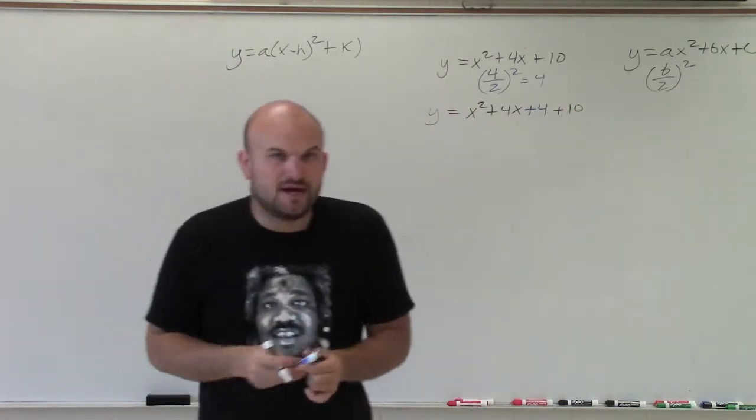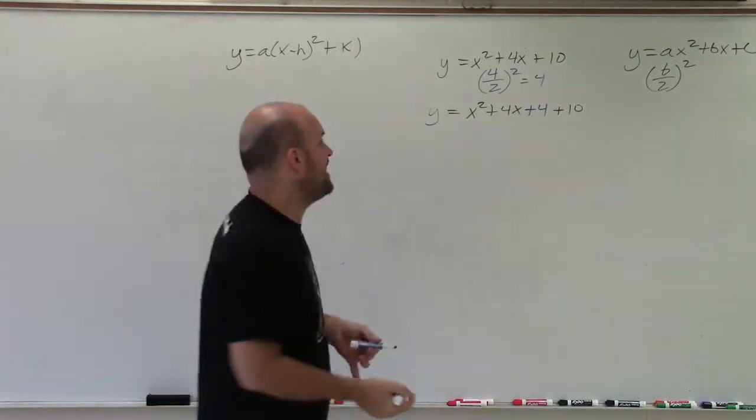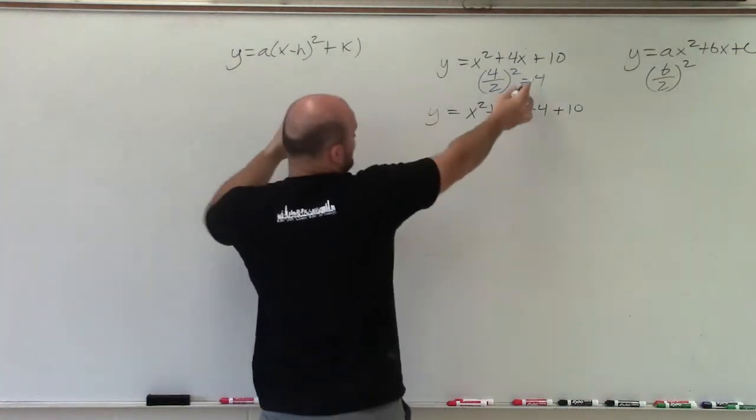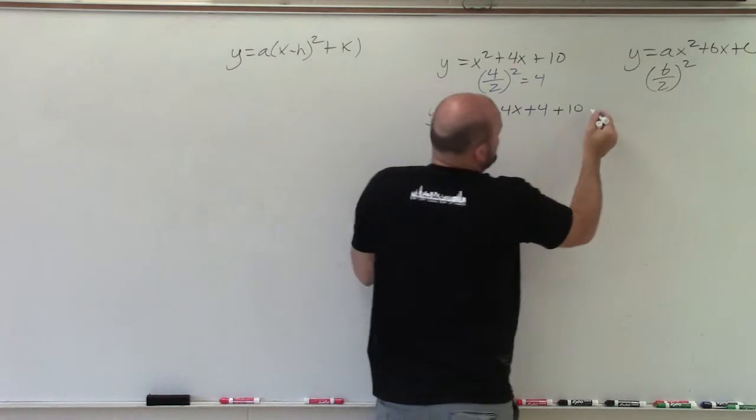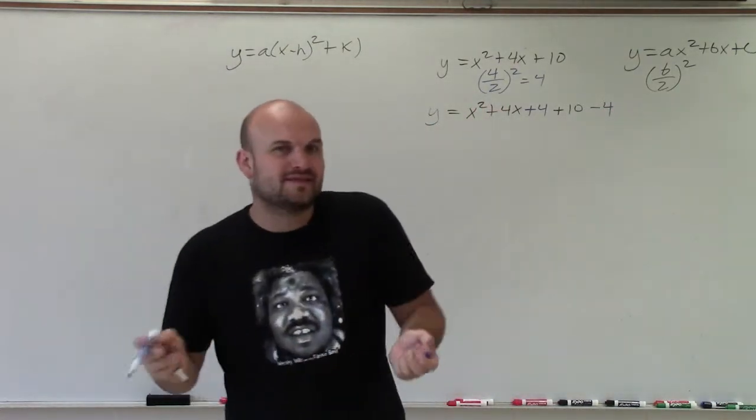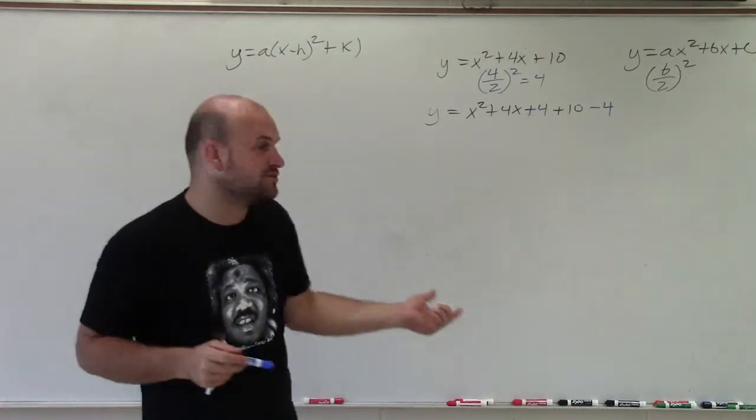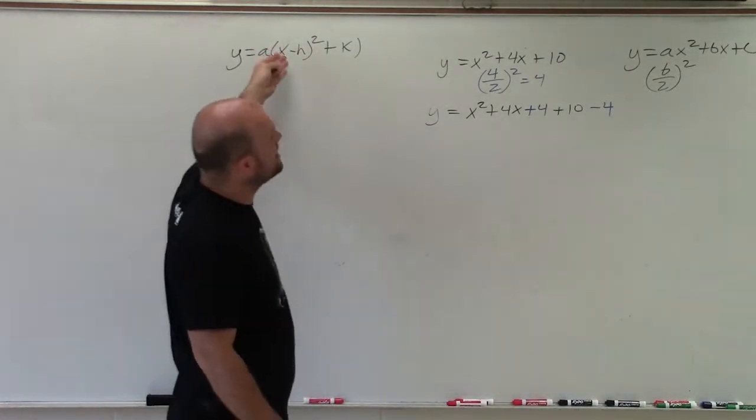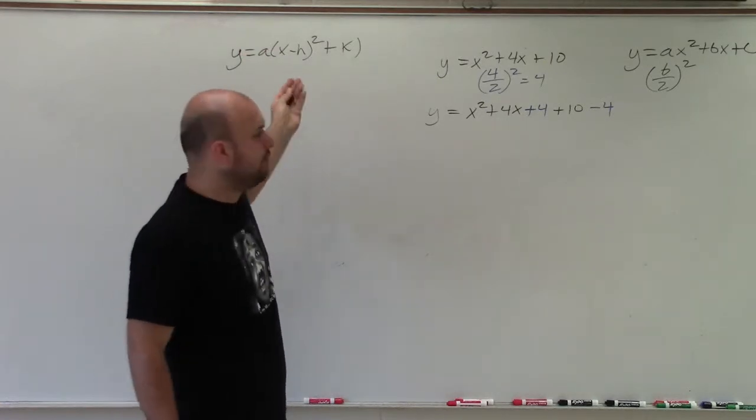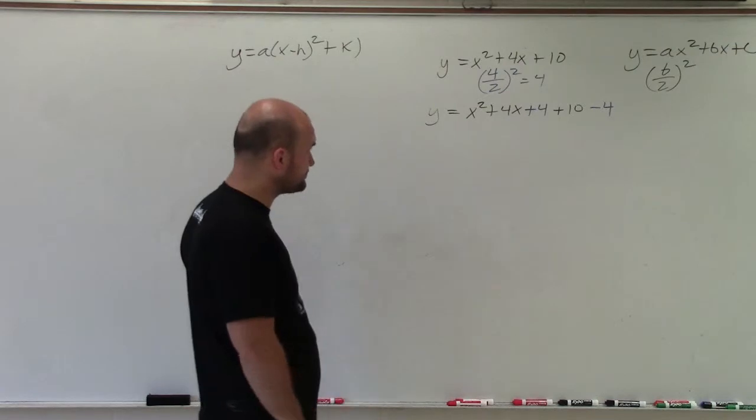In equations, we always like to balance, right? One side is equal to the other side. So if I add 4 on the right side, to make this equation still true, I have to subtract 4. And I'm going to keep it on the same side, unlike when we solved quadratics by completing the square, because I want to produce an equation. So I don't want anything else on the side with the y.